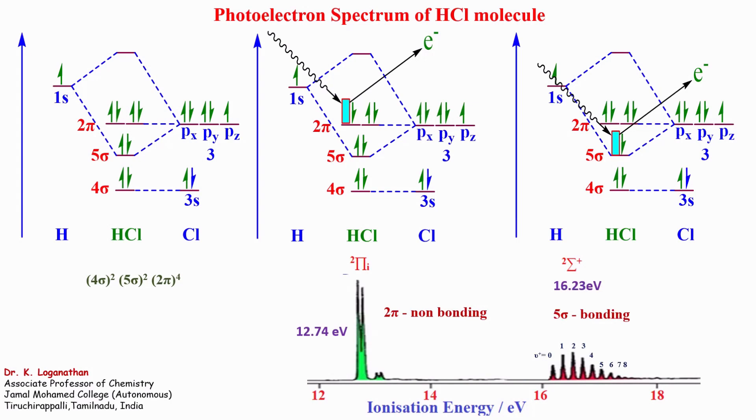The 2π band system exhibits partially resolved spin-orbit split 2π₃/₂ and 2π₁/₂ components with the dominant vibration bands v⁺ = 0 and v⁺ = 1, followed by an extensive weaker vibrational progression from v⁺ = 2 through 14.